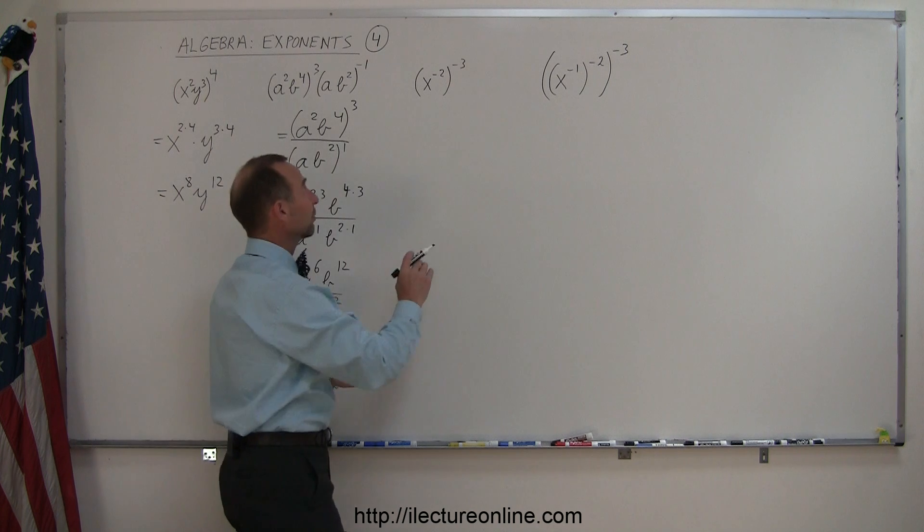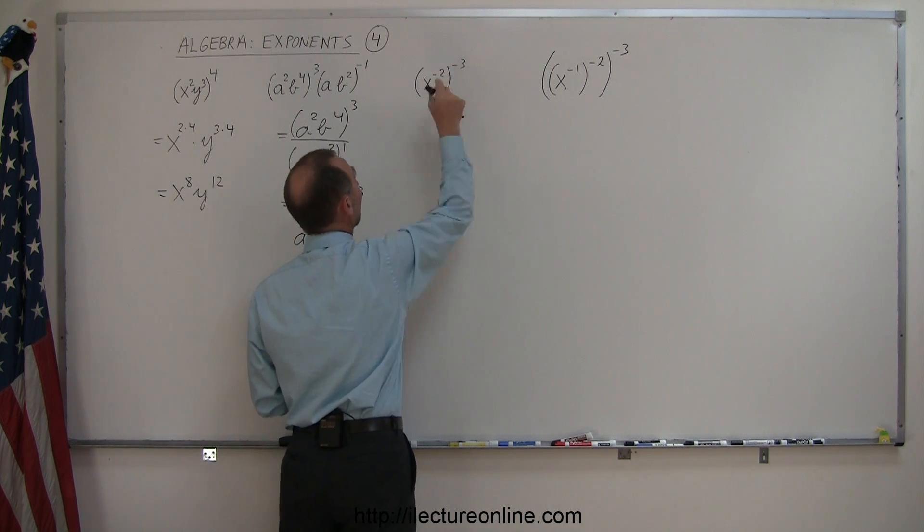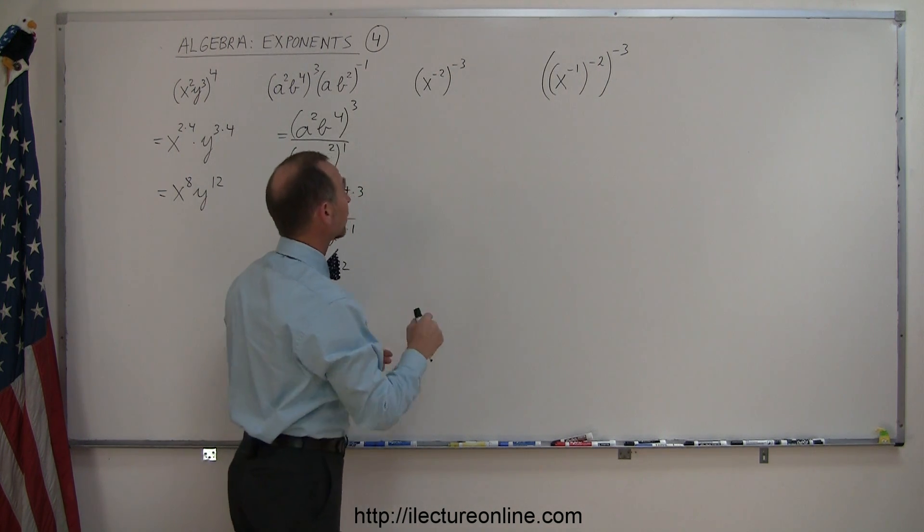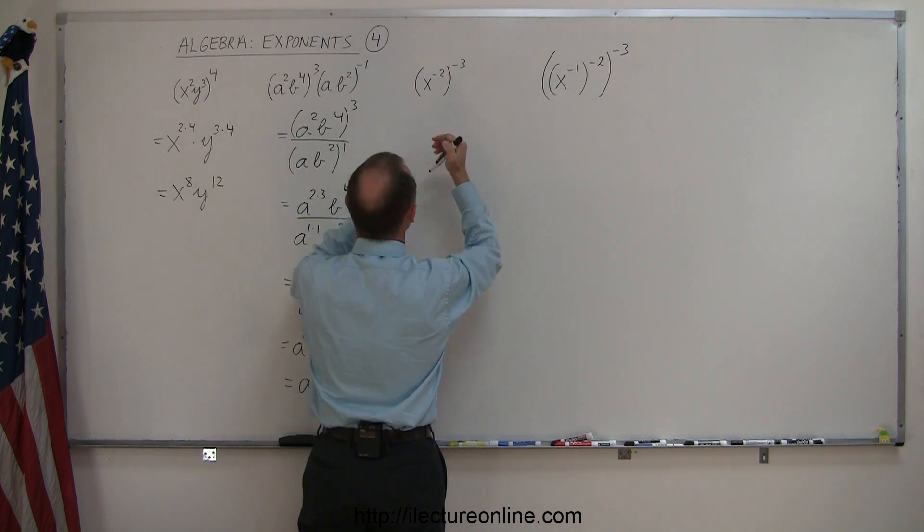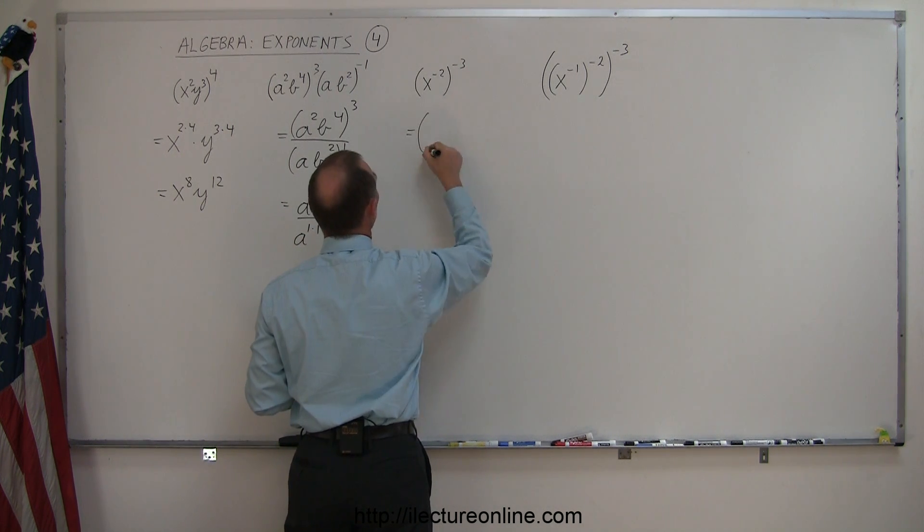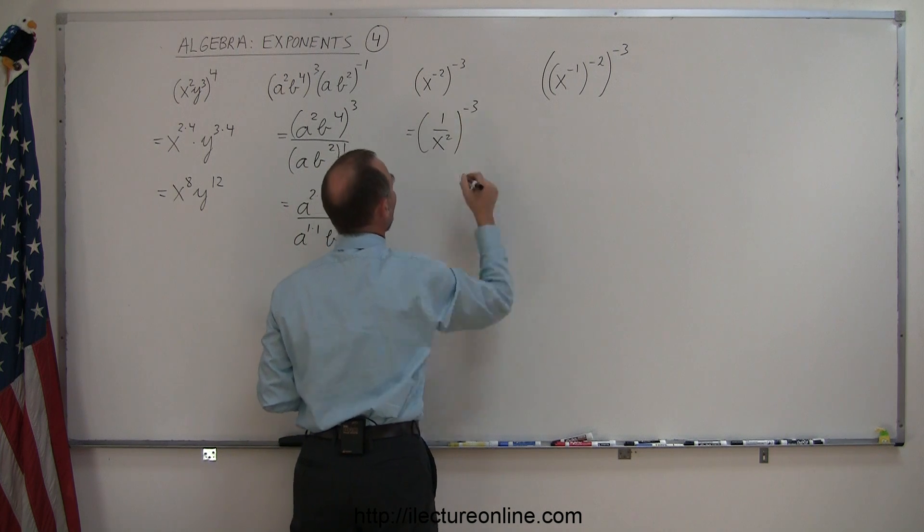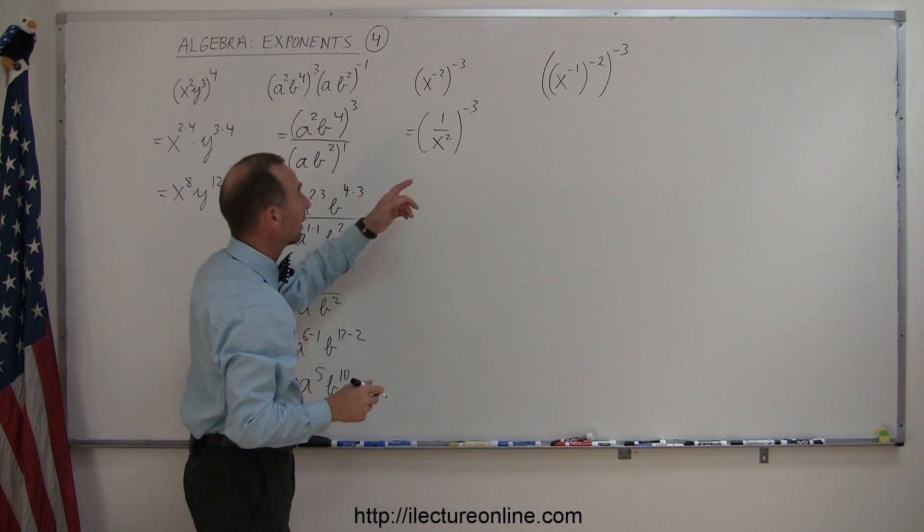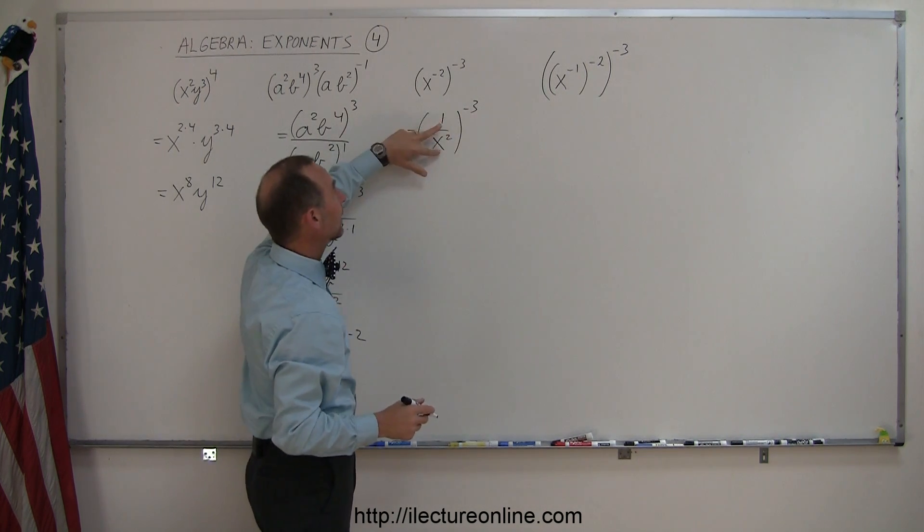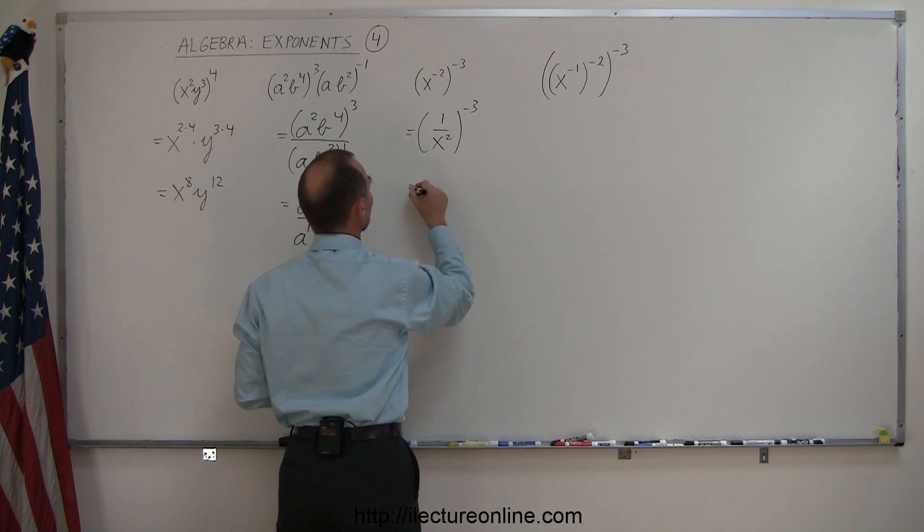Here we have a negative exponent inside the parentheses and then raised to a negative exponent. So what we can do here is look on the inside. We can rewrite this as 1 over x to the 2nd power. So by moving it to the denominator I change the exponent to a positive number, raised to the minus 3 power. And then again I can get rid of this by taking the inverse of that.